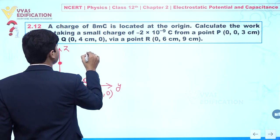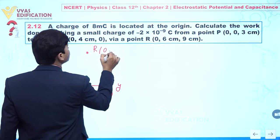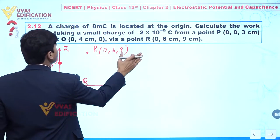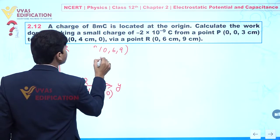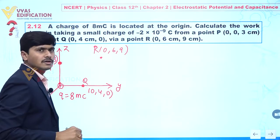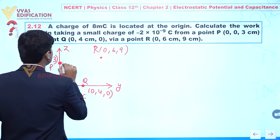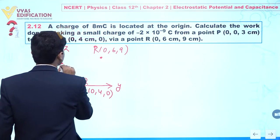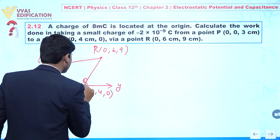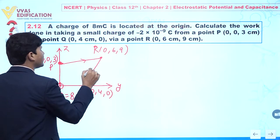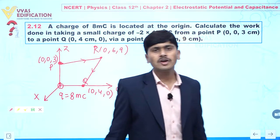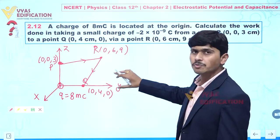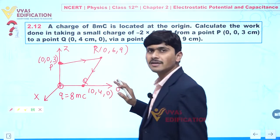Point R is at (0, 6, 9). So the small charge first goes from P to R and then from R to Q. This is the path that is given to us. Our objective is to calculate the total work done in bringing the small charge from P to Q.